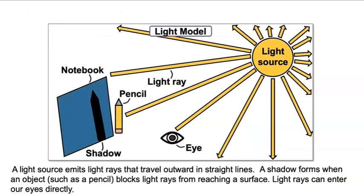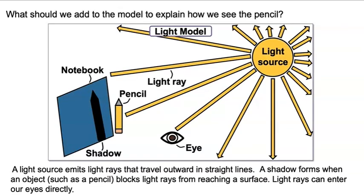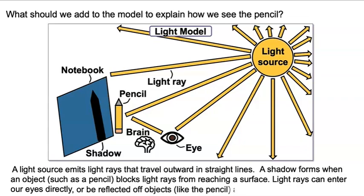Let's revise our light model. What should we add to the model to explain how we see the pencil? I think we need to add that rays of light reflect off the pencil to our eyes. Anything else? Hey, maybe we should show a brain too. Now let's update our explanation. We already have light rays can enter our eyes directly, so let's add or be reflected off objects like the pencil, and then enter our eyes. Great job.